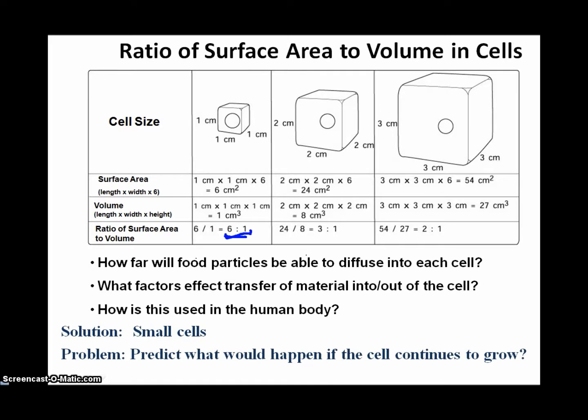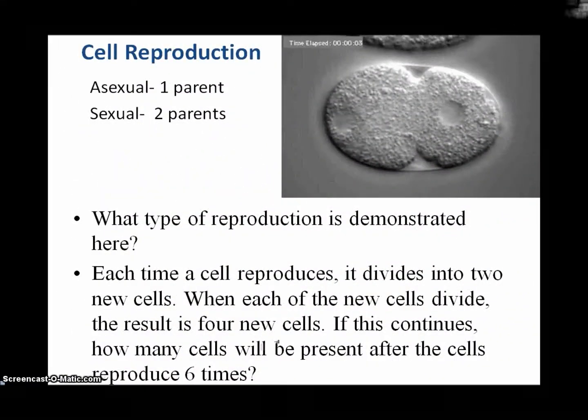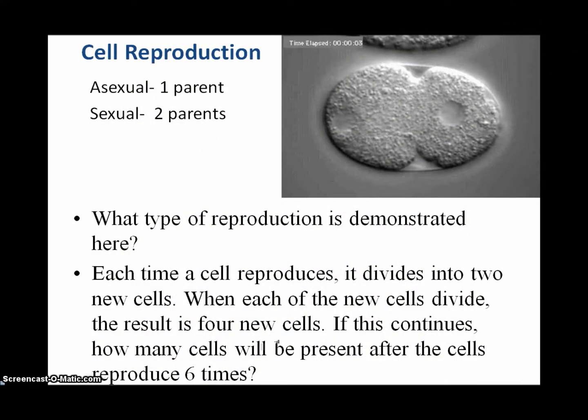So now in your notebook, predict what would happen if a cell continues to grow instead of staying at a smaller size. If smaller cells are more efficient than larger cells, what's to do with the cell that begins to grow? And perhaps the suggested answer is that a cell can simply divide.